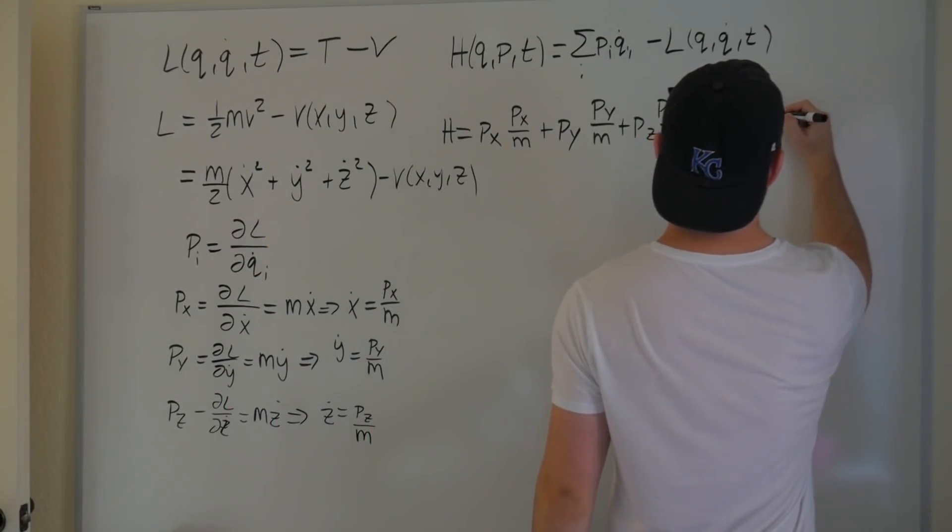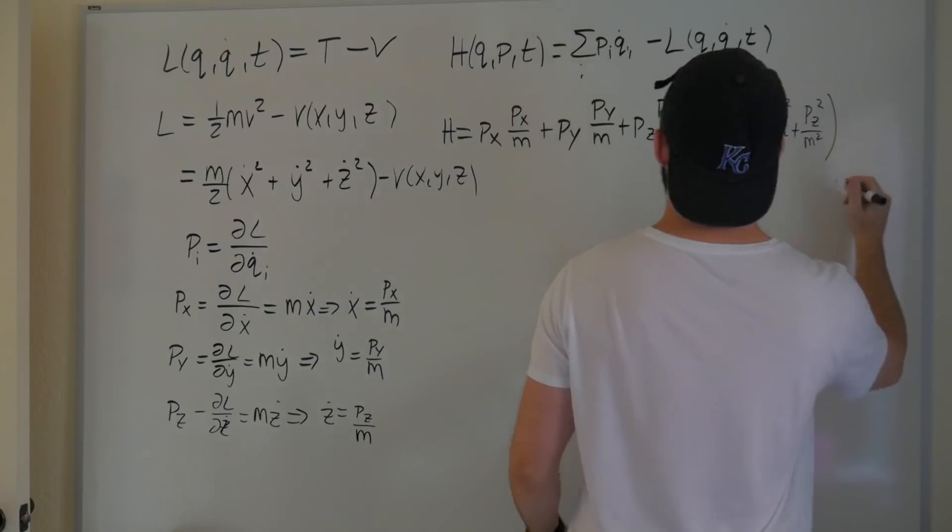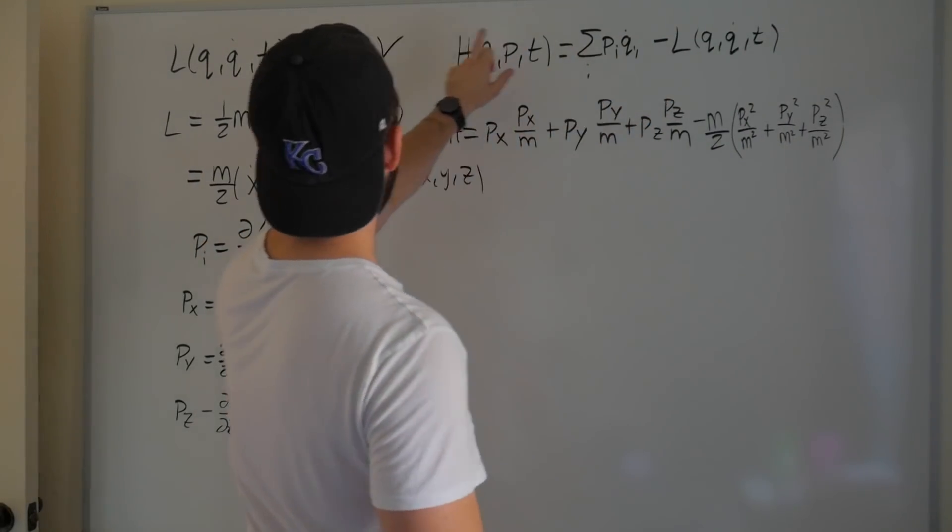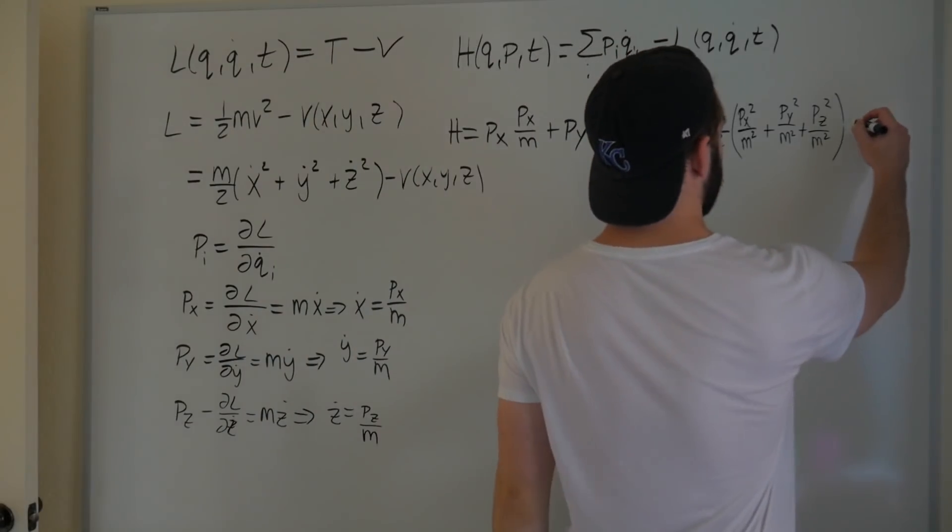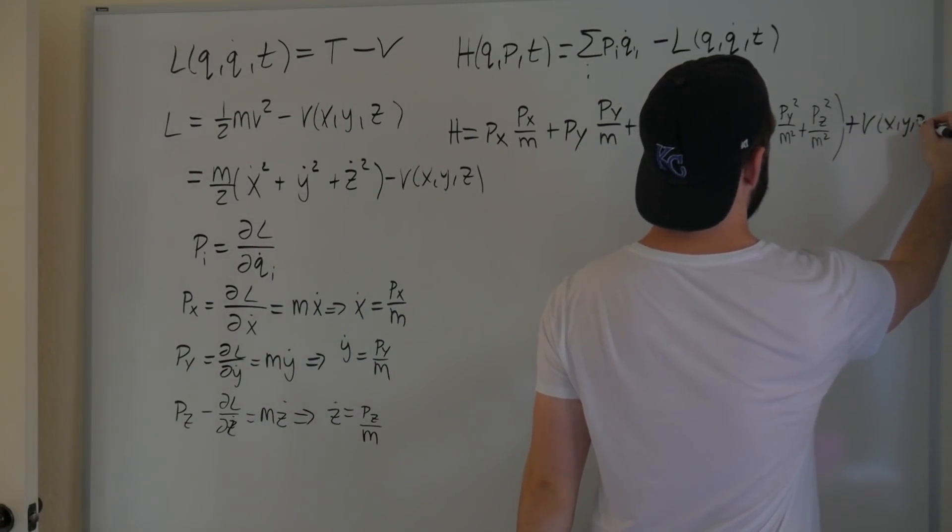Plus, and then the same thing goes for these ones. So we got py squared over m squared, plus pz squared over m squared, and then minus our potential. Well, actually, it's minus minus our potential, which makes it plus our V of x, y, z.